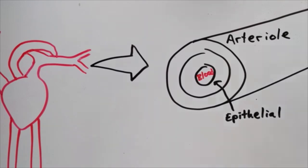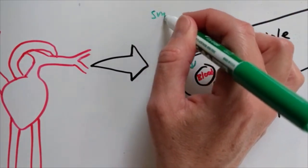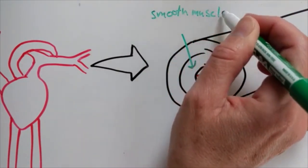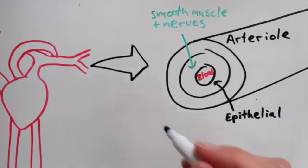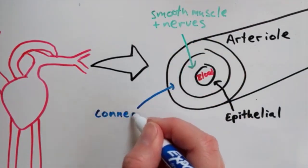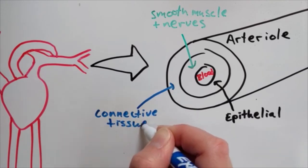The next layer is made up of smooth muscle, which can contract and change the diameter of the arteriole. Cells from the nervous system regulate muscle contraction. The last layer is connective tissue, which holds the blood vessel together.